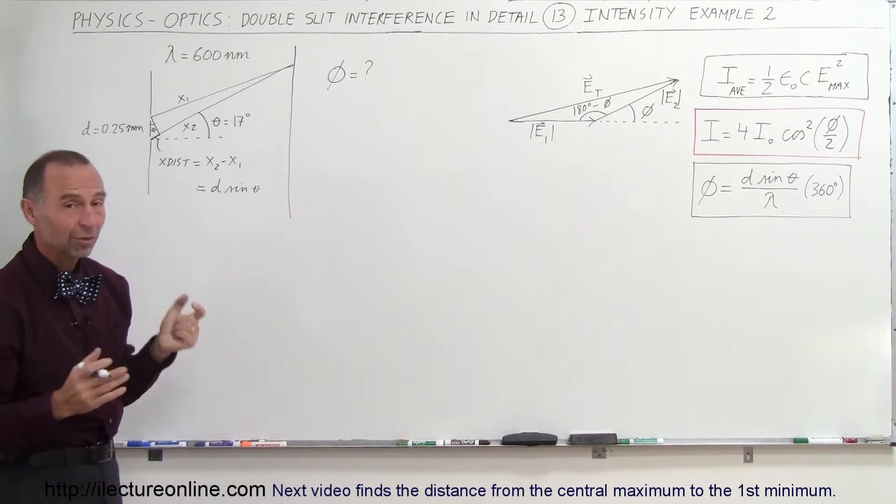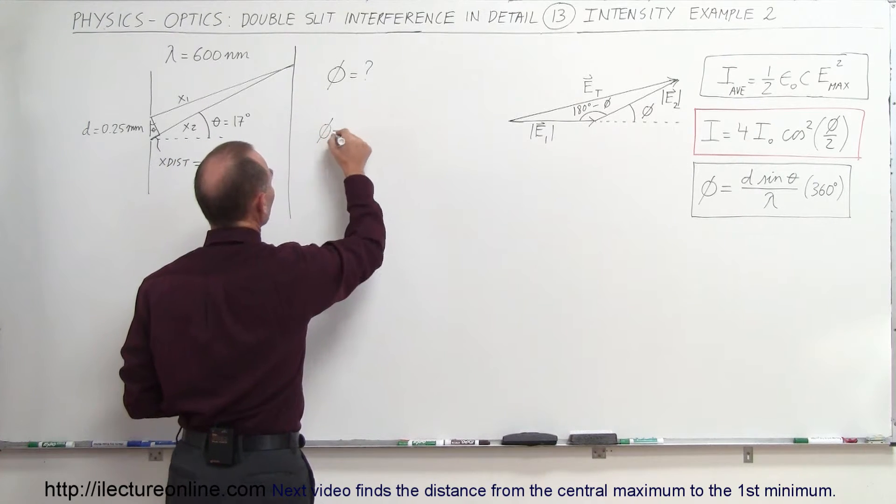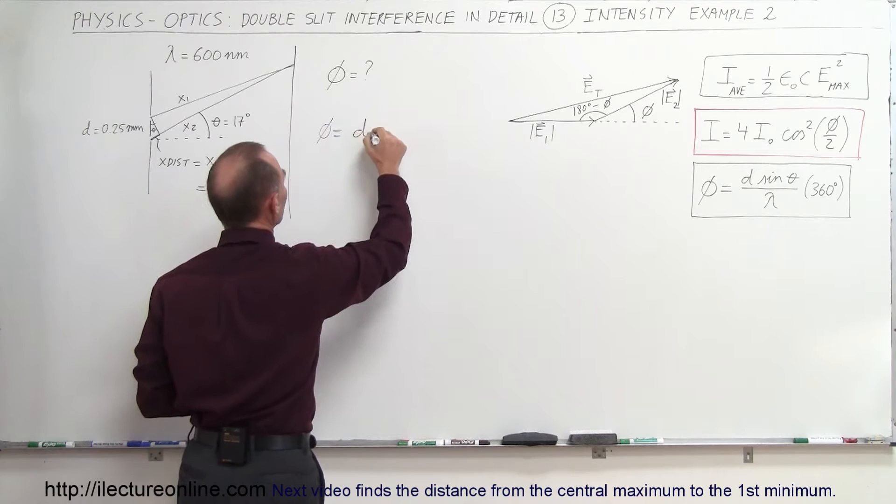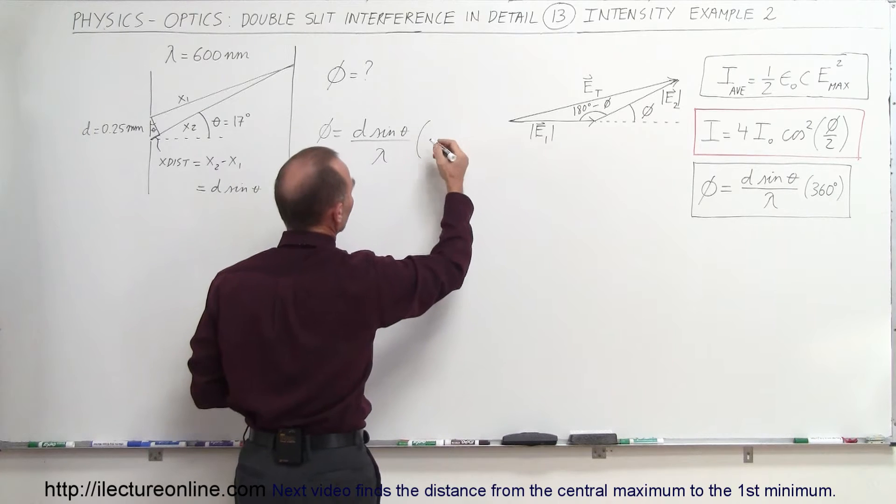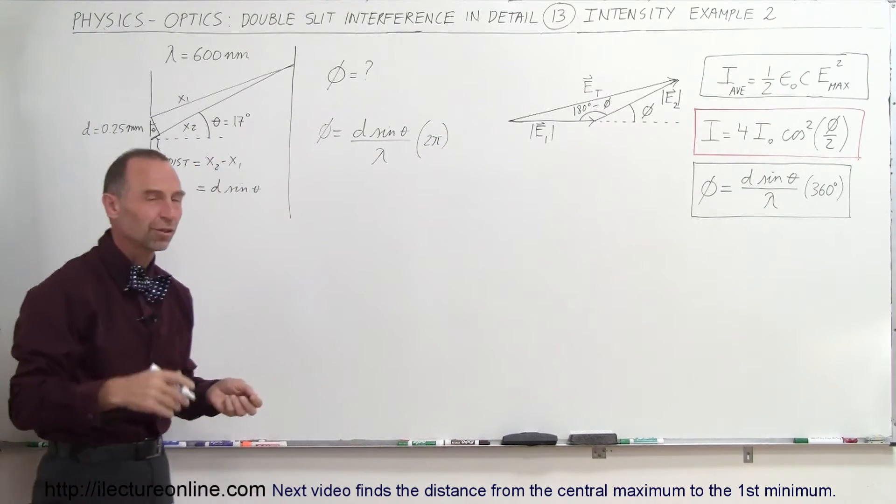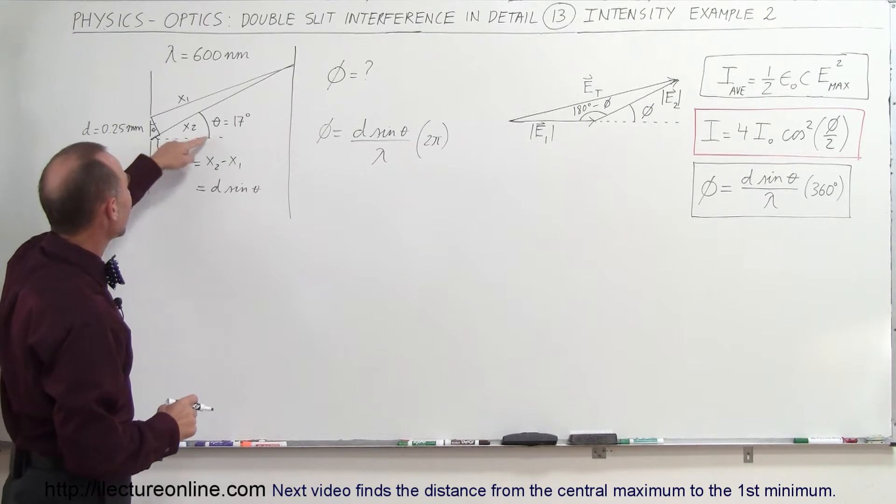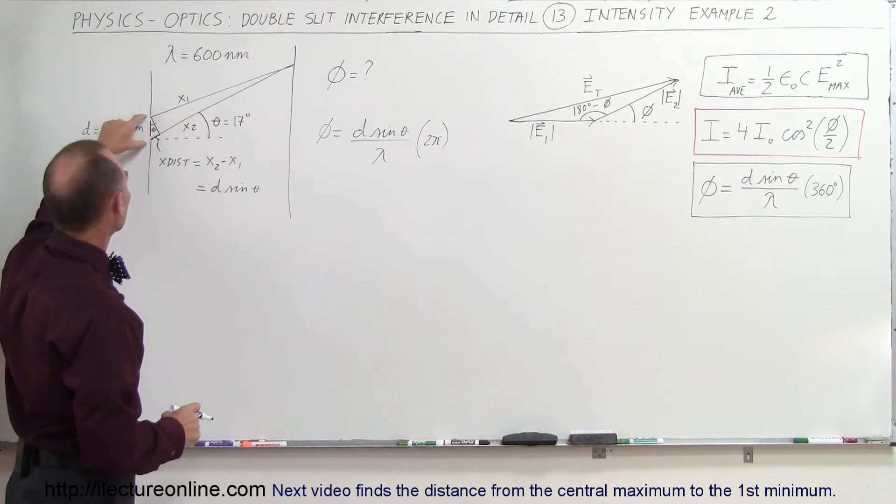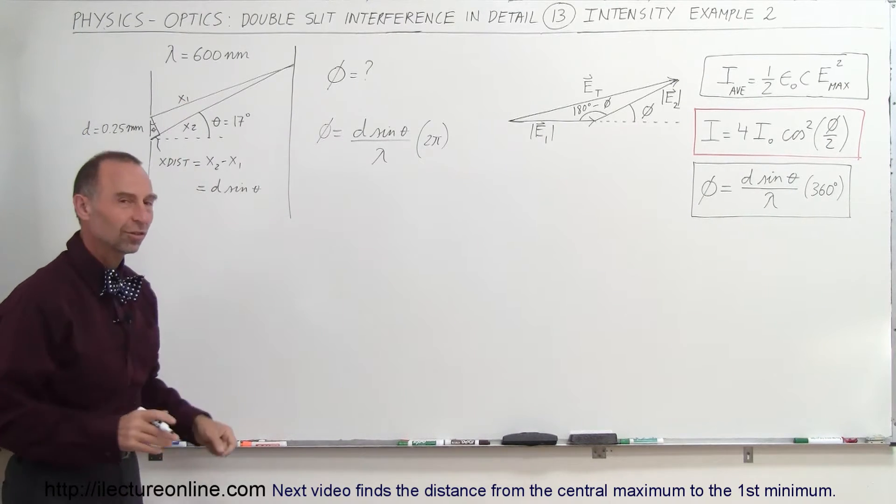And to find the phase difference, which is our objective here in this problem, we take that φ is equal to separation distance times the sine of theta divided by the wavelength times either 360 degrees or 2 pi radians. Let's do it in radians first, and then we'll go ahead and do it in degrees. So we're given the angle to be 17 degrees, we know the separation distance to be a quarter of a millimeter, and the wavelength used is 600 nanometers, so when we plug those numbers in...